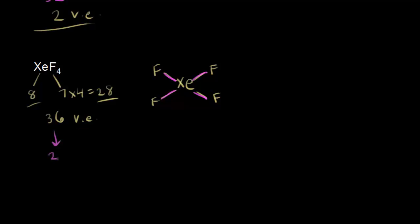The 28 leftover electrons go on our terminal fluorines. Each fluorine gets an octet, so 6 more valence electrons on each of 4 fluorines — 6 times 4 is 24. So 28 minus 24 gives us 4 valence electrons left over, and those go on our central xenon atom in the form of two lone pairs.